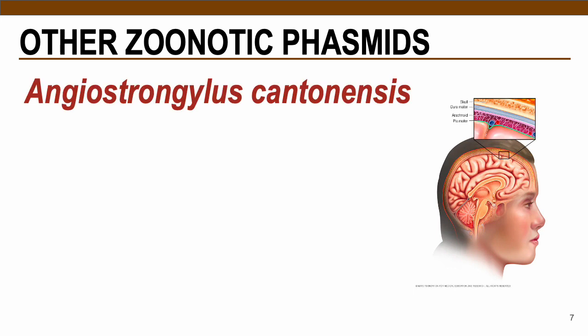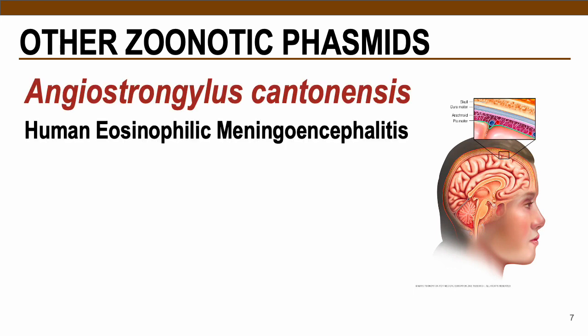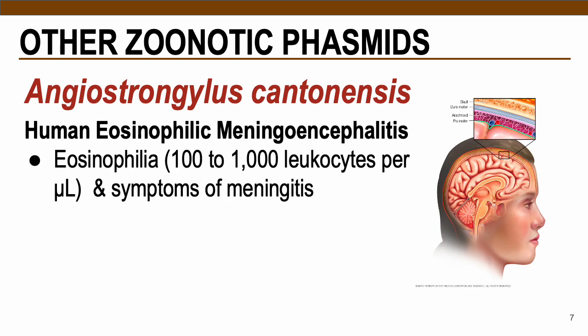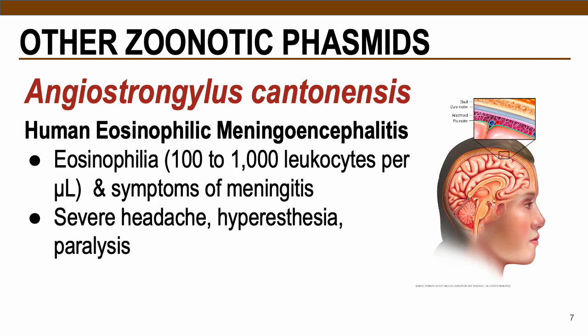In terms of pathology, this causes human eosinophilic meningoencephalitis, characterized by eosinophilia at around 100 to 1,000 leukocytes per µL in CSF, and symptoms of meningitis — inflammation within our brain meninges.